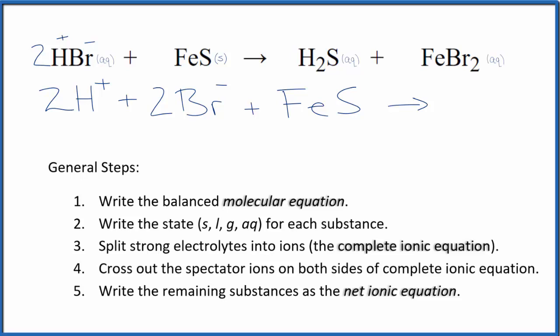For the products, H2S, it's a weak acid. So we're not going to break it apart. We don't split apart weak acids. So it's just going to stay H2S. And then for our iron 2 bromide, bromine, that forms ions.